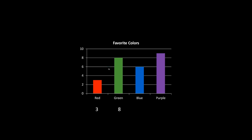Blue is on this line here — we follow it over and we can see that there are six students who liked blue. And purple right here is halfway between eight and ten, and that is nine. So now we know how many students liked each color. We can tell very quickly that purple was the most popular color and red was the least popular.